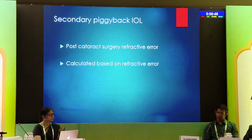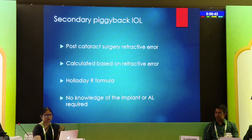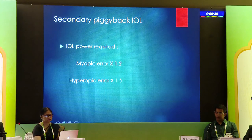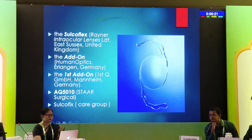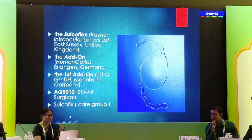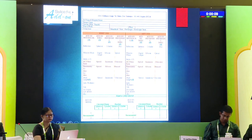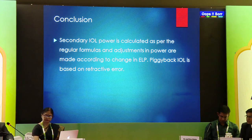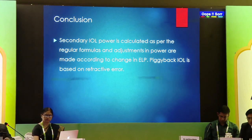For secondary piggyback IOLs in post-cataract refractive error, all you need to know is the refractive error — you don't need to know what lens has been implanted in the bag. You only need to know whether the existing lens is in the sulcus or in the bag, as that affects your options. The piggyback IOL power is calculated as: myopic error multiplied by 1.2, and hyperopic error multiplied by 1.5. Commonly available options include the Sulcoflex; others are also emerging. Some lenses additionally require keratometry, axial length, and white-to-white measurement for calculation.